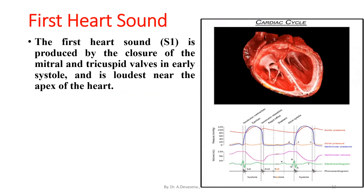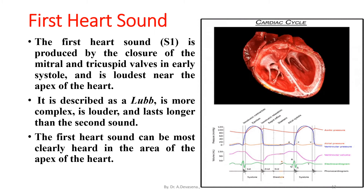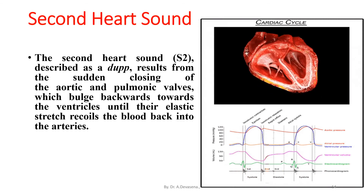The first heart sound, S1, is produced by the closure of the mitral and tricuspid valves in early systole and is loudest near the apex of the heart. It is described as a 'lub', is more complex, louder, and lasts longer than the second sound. The first heart sound can be most clearly heard in the area of the apex of the heart.